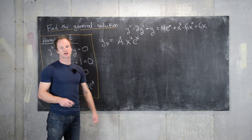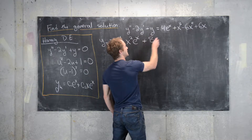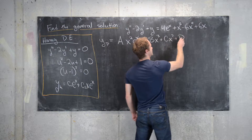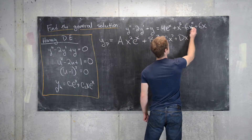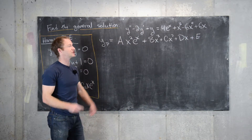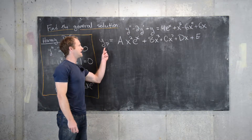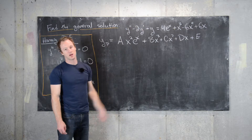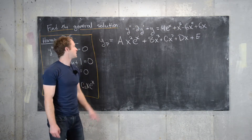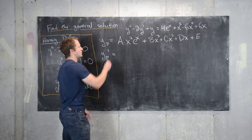So we'll take a·x²·e^x for the exponential part. For the polynomial part, there are no tricks — we just take an arbitrary cubic: b·x³ + c·x² + d·x + e. Now we determine the undetermined coefficients by taking the first and second derivatives, plugging into the ODE, and solving for a, b, c, d, and e.